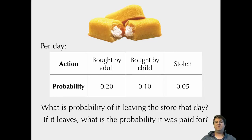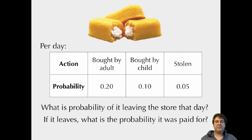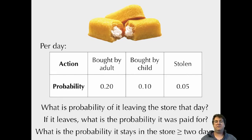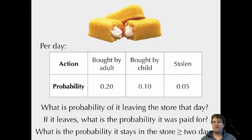If the Twinkie does leave, it was probably paid for. We figure out all the ways it can leave — that's 0.35 — and out of those, 0.05 out of 0.35 are stolen. So the probability it was paid for is 1 minus 1/7, or 6/7. The probability it stays in the store for at least two days is 0.65 times 0.65. Just basic probability — think about the possible outcomes and figure out the probability given those outcomes.